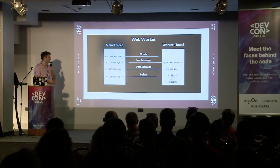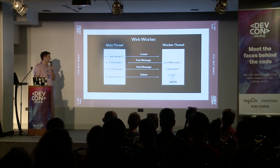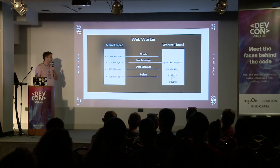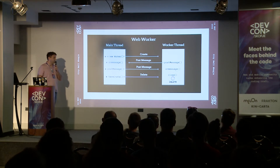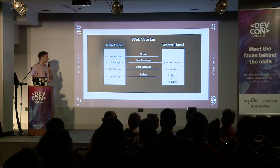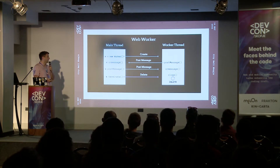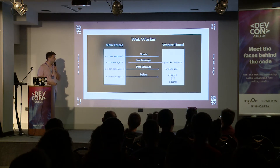Let me show you more about the API. On the main thread, we create a new instance of a worker and we can post a message to the worker thread. On the worker thread, we can also listen to messages, listen to events, and post messages back to the main thread. And at the end, we can terminate the worker.